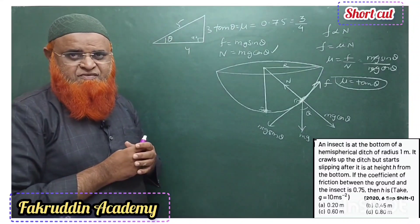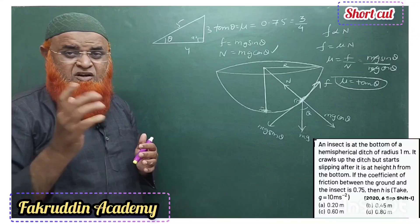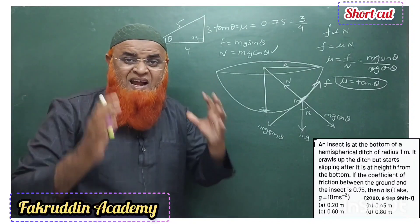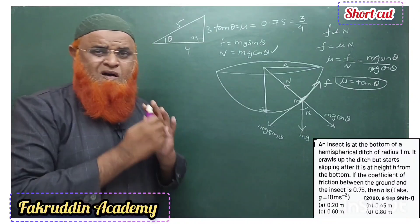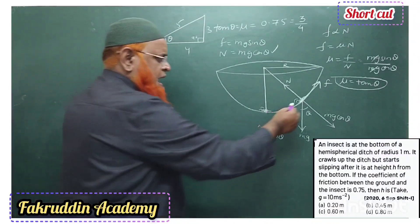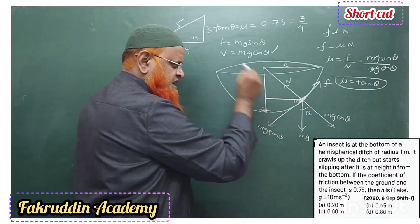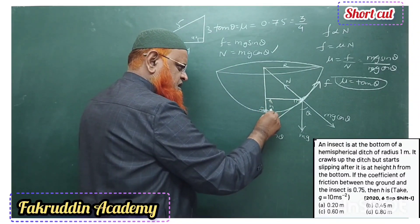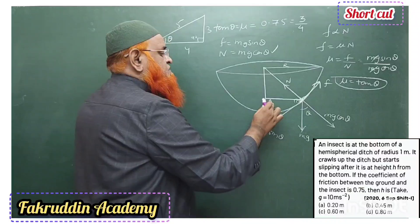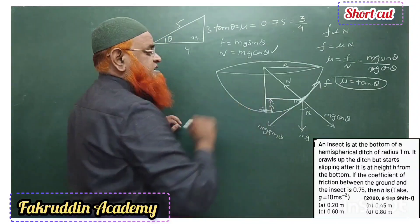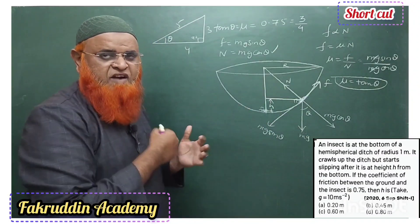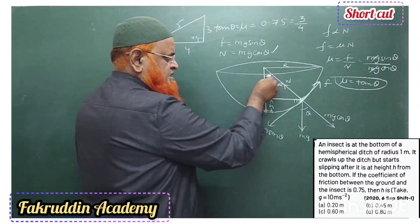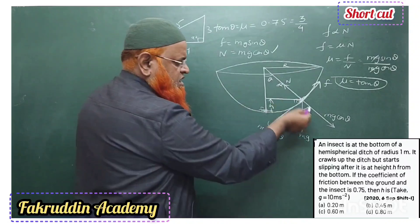The question asks up to what height the insect is able to crawl. Let's call this height h — the vertical distance from the base of the sphere up to the point where the insect rests. We need to find that height h.